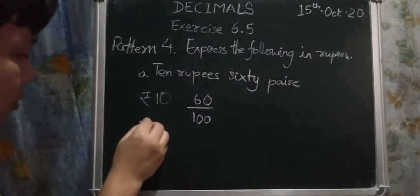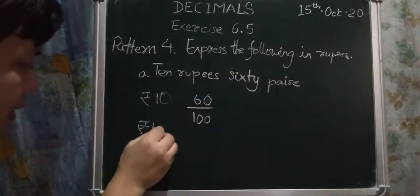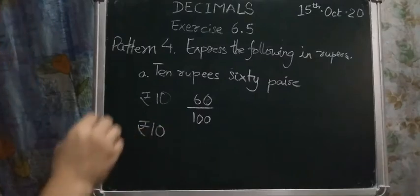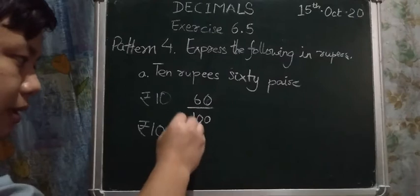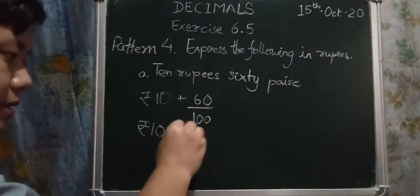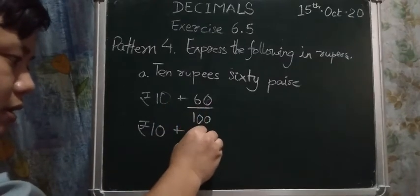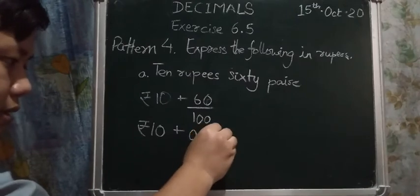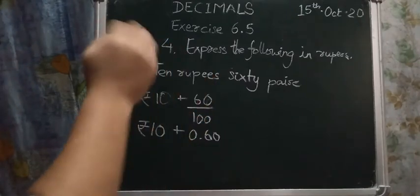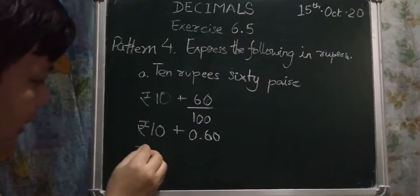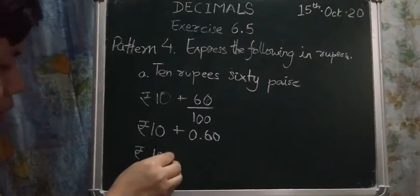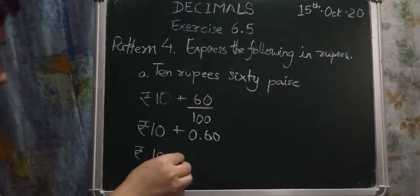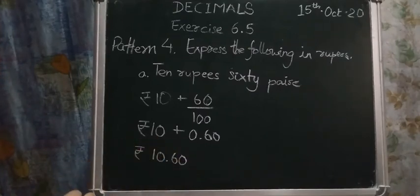You don't need to cancel the zeros. So rupees 10, there are two decimal points, so this will be plus 0.60 or 0.6 also we can write. So finally, rupees will be 10.60.